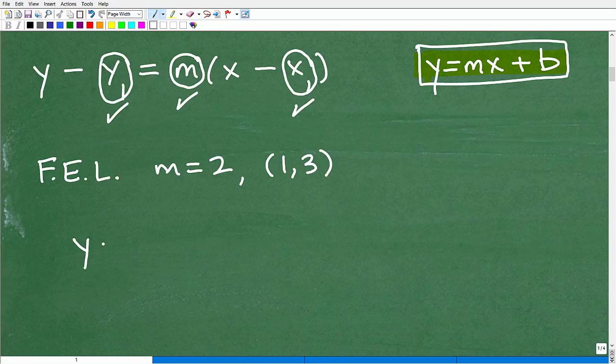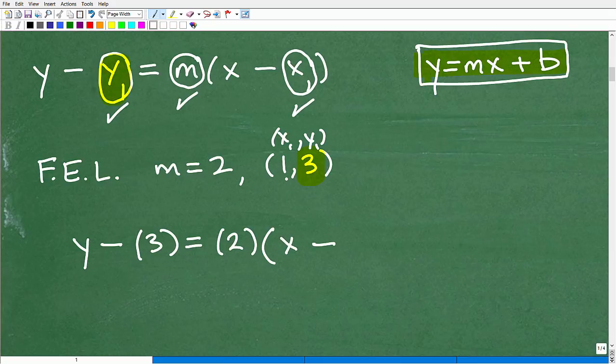Now, I have the point 1, 3. Remember I told you to find the equation of a line, you need the slope and a point that's on the line. So here, I have the slope, and right here, this 1 is an XY ordered pair. But this 1 is our X1, and this 3 is our Y1. So we're going to be plugging in 3 right there. Our slope is 2, and then right here, this X1, we'll be plugging in 1.